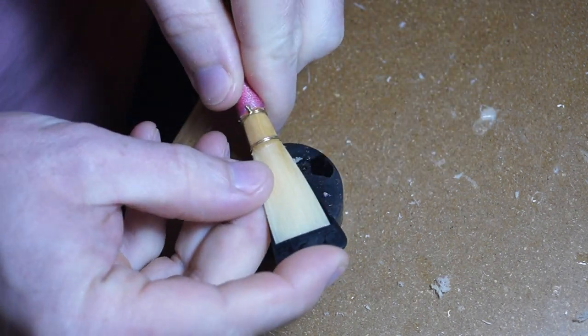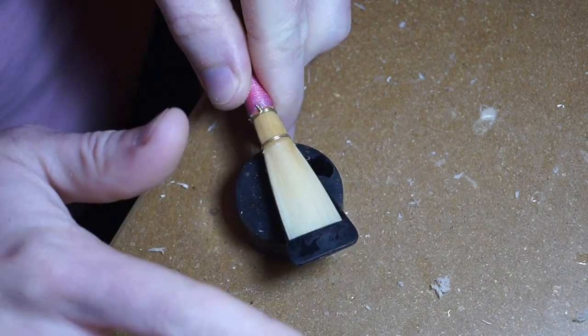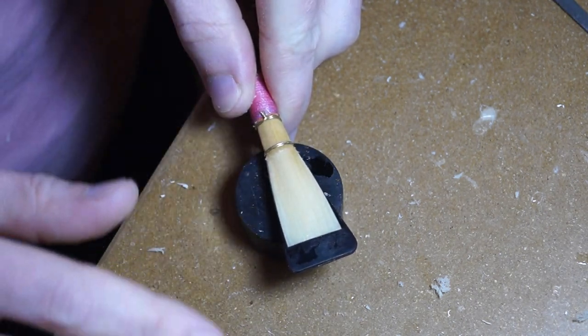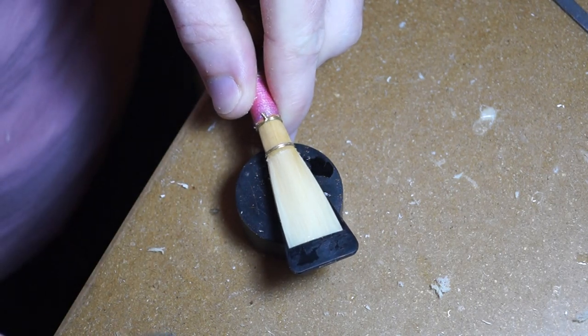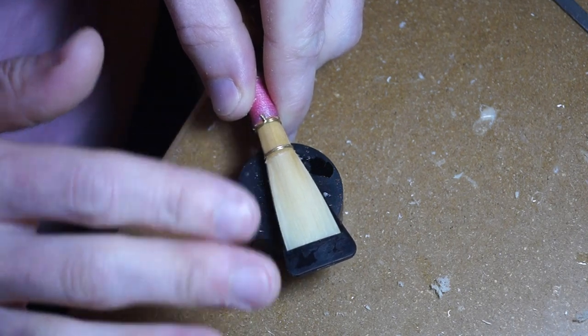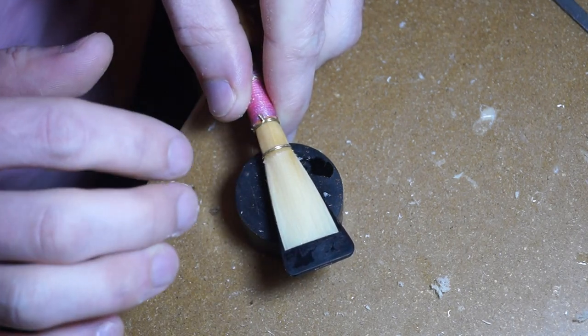I'm working on a Contra reed right now and I've done all the scraping with my file and knife. I'm ready to go over the whole reed with sandpaper to smooth out the final texture and blend any areas that might have little bumps or things like that in it.